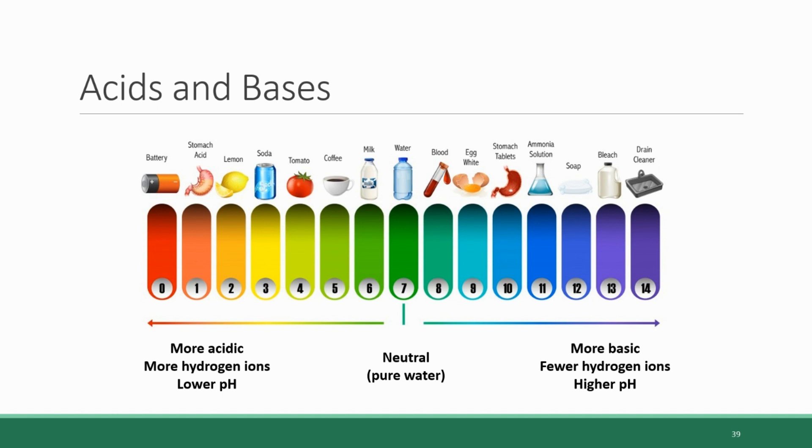As you go lower and lower on the scale of pH values, the concentration of hydrogen ions actually increases. Things get more acidic as you go lower on the pH scale because hydrogen ions go up. Conversely, as you go higher on the scale above 7, the concentration of hydrogen ions decreases and the substance becomes more basic.